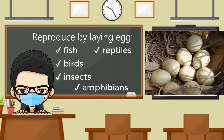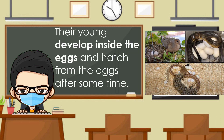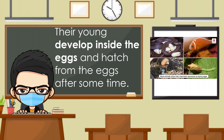All kinds of fish, birds, insects, reptiles, and most amphibians reproduce by laying eggs. Their young develop inside the eggs and hatch from the eggs after some time.